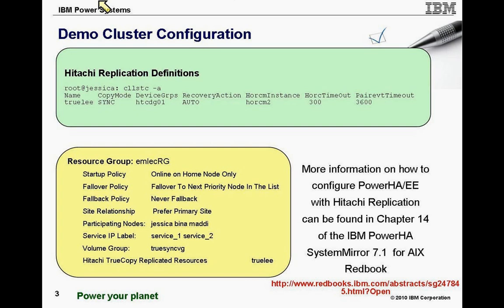Now let me give you an overview of our cluster configuration. We have a single Hitachi replication definition called TRULi that is synchronous, consisting of the device group HTC DG01. That is actually configured into the Horcum comp file consisting of the three LUNs shown in the previous slide. We have a single resource group with JESSICA being the primary. The second node, BINA, will not be active for this demonstration, and the third node is remote.